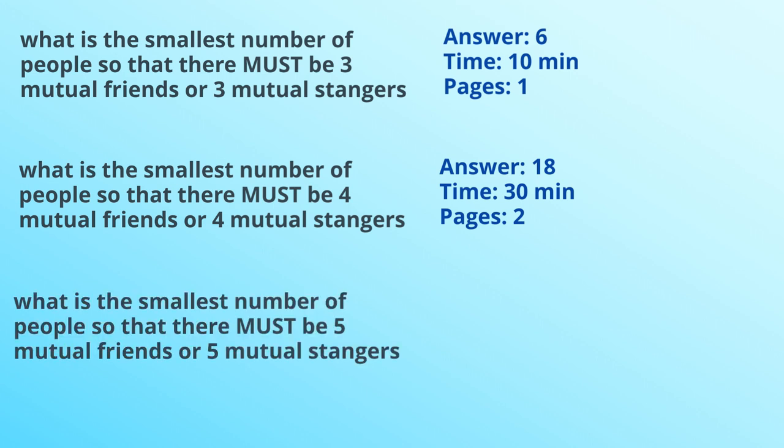So now what about when we go to five? Five mutual friends or five mutual strangers? Well, it can't be that hard, can it? Well, it turns out the answer is, well, we don't know. Mathematicians don't know the answer to this question. Even though three and four are fairly straightforward, they're a little bit difficult. For five, we can't work it out. We know, what do we know? Well, we know that the answer is between 43 and 48 inclusive. That's all we know. So that's why I call it the hardest seemingly simple problem in mathematics.